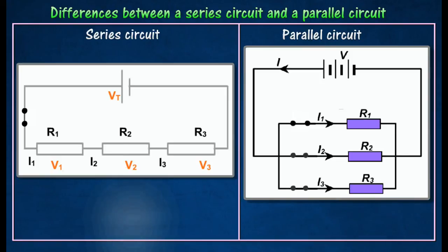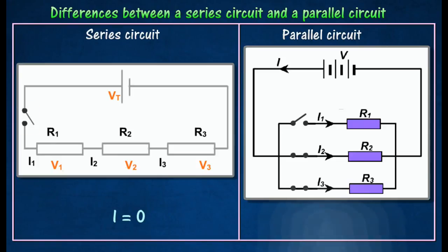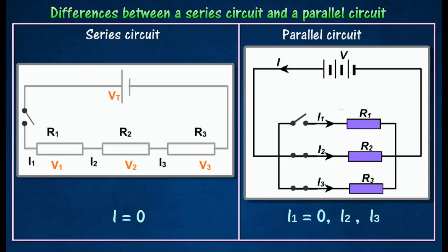In a series circuit, no current flows when the switch is open, while in a parallel circuit, current stops only in the branch that is open. The current continues to flow in other branches.